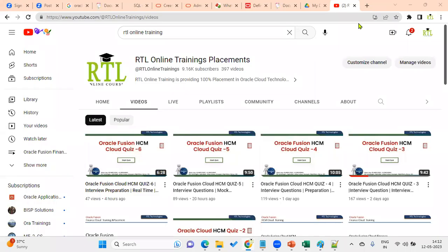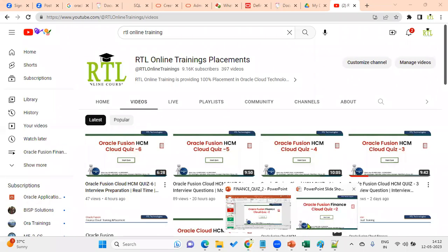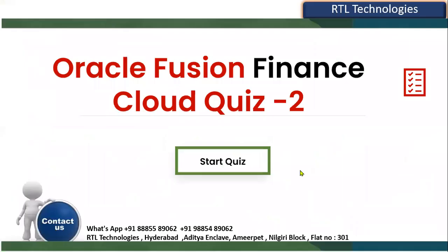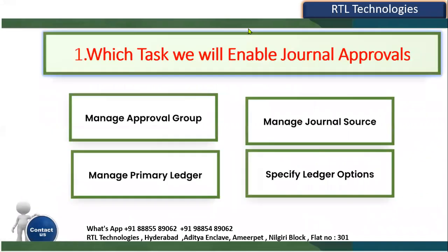Welcome to RTL online trainings and placements. We are entering into the second quiz for Financials Vision. The first question is: in which task will we enable journal approvals?